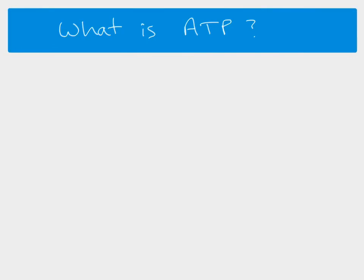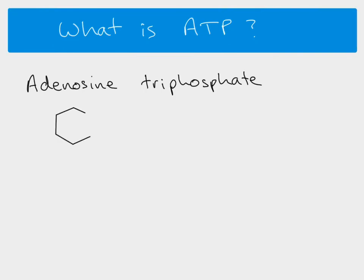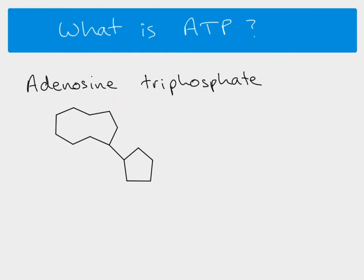ATP is an energy transfer molecule. It's called adenosine triphosphate, and it's technically a phosphorylated nucleotide. Just like other nucleotides, it has a nucleotide base — this is adenine — and it then has ribose, a pentose sugar. The adenine and the ribose together make the adenosine part, and then attached to the ribose we've got three phosphate groups.